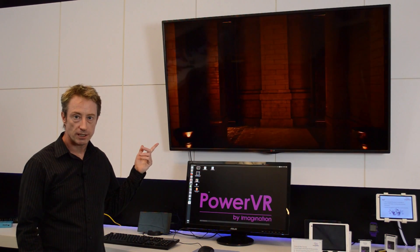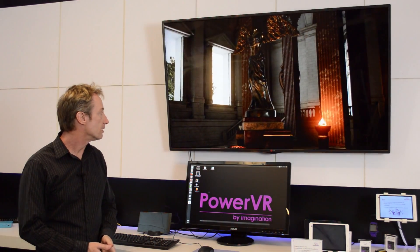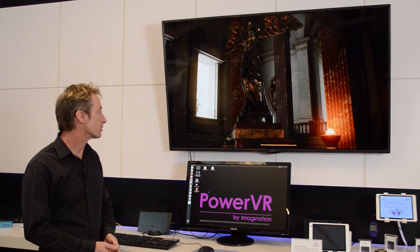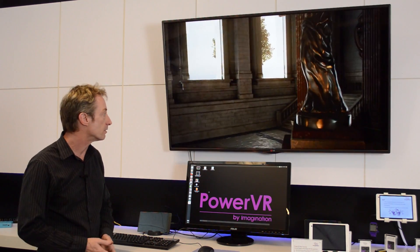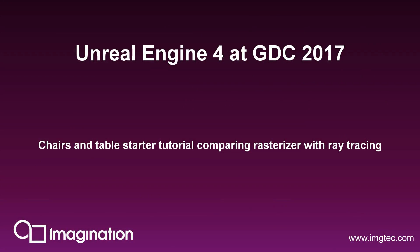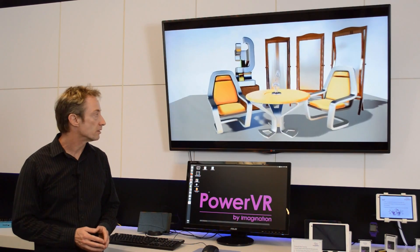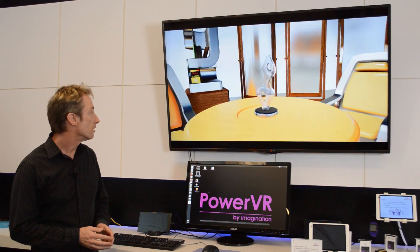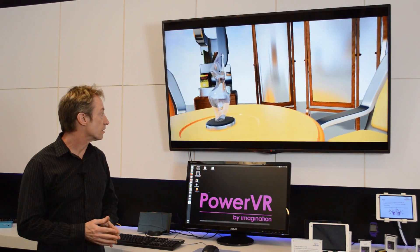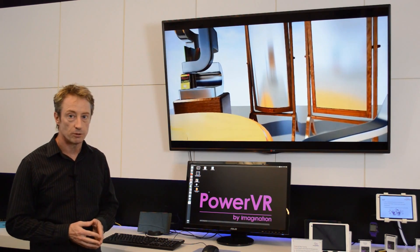Here we have an example game on the Unreal Engine — an example project called Sun Temple. The configuration is that Sun Temple is running on top of the Unreal Engine, which is using our Vulkan API on top of the PowerVR GPU. Now we're running Chairs and Tables, which is another project — a tutorial project for Unreal Engine — running using the standard mobile shader, just regular raster graphics as you would get in a normal mobile device.